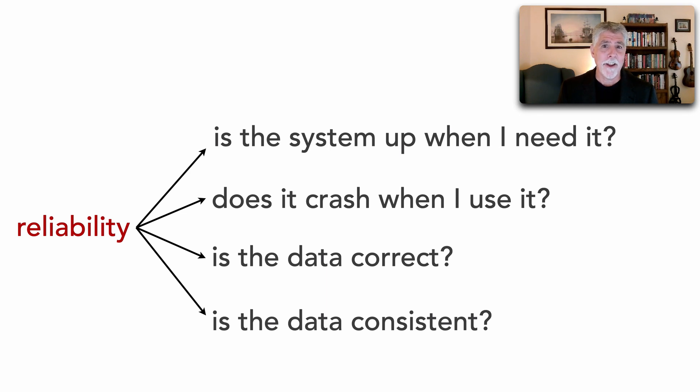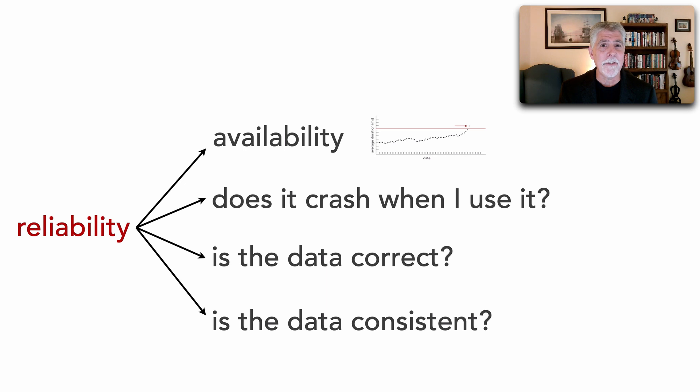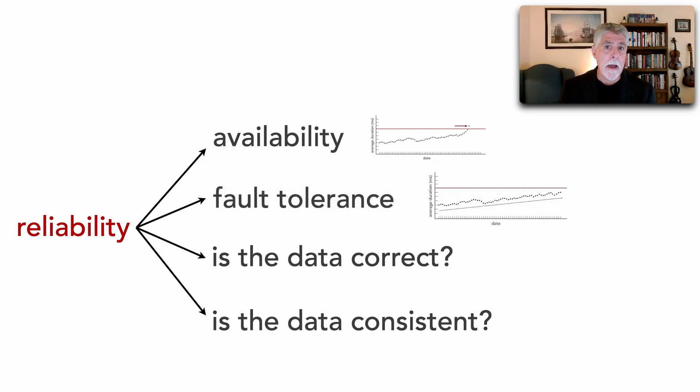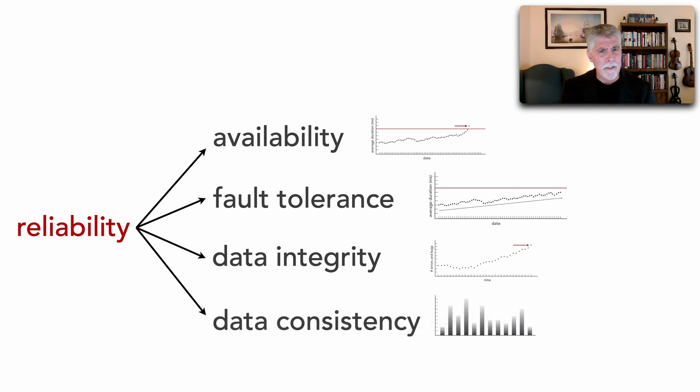And do you know what? These are all other kinds of characteristics. Is the system up when I need it? That's all about availability. Another kind of architecture characteristic. We can measure availability. Does it crash? That's an element of fault tolerance. Something else that we can actually measure and track. Is the data correct? It's really an element of data integrity. Something else we can also measure. And finally, is data consistent? It's all about data consistency, which is a little different than data integrity. All of these are things that we can actually track. And so what we see is that when we talk about reliability, what we're really talking about are these four elements, the system being available, fault tolerance, integrity of data, and also the consistency of data. And so this is a really good example of a composite characteristic.